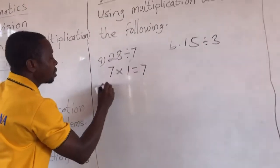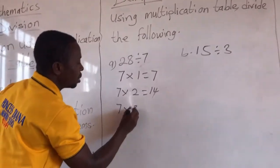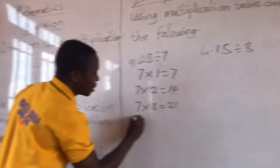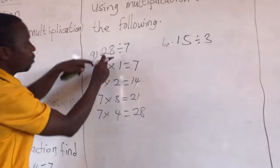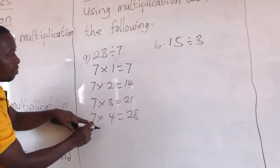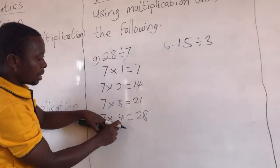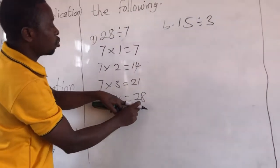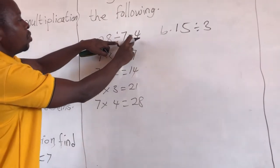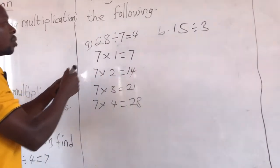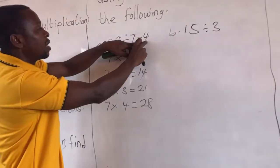So 7 times 2 gives us 14. Then 7 times 3 gives us 21. Then 7 times 4 gives us 28. Now we get our dividend which is 28. The number we multiply by 7 to get 28 is our answer. So 28 divided by 7, using the multiplication table, gives us 4.